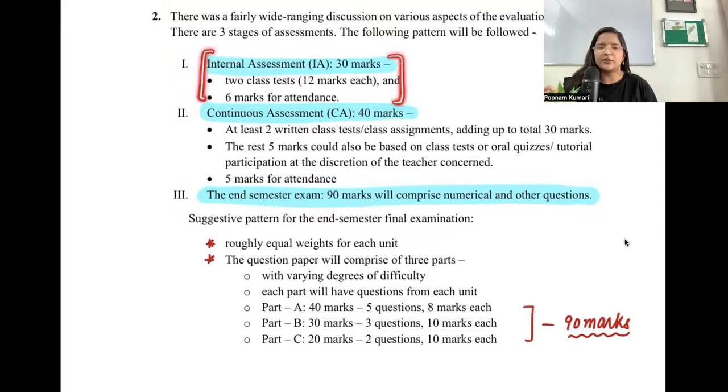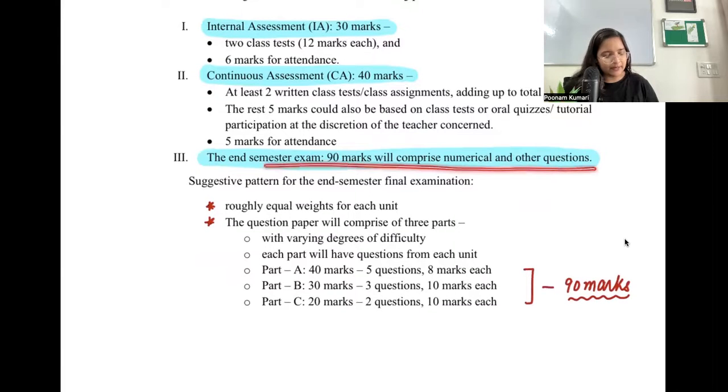Your internal assessment will be for 30 marks. It includes class tests and attendance. Continuous assessment mein, they've written at least two written class tests or assignments adding up to a total of 30. Rest five marks could be based on oral quizzes, tutorials, and it all depends on your teacher. Finally, your final paper will be 90 marks. This is your final exam, for 90 marks as they are saying.